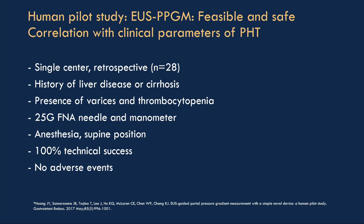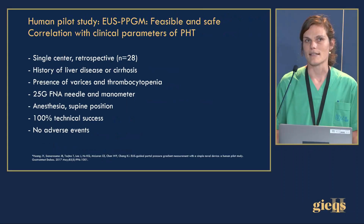After that, there was a human pilot study that showed echoendoscopic portal pressure gradient measurements were feasible and safe, and that they correlated with clinical parameters of portal hypertension. This was a single-center retrospective study including 28 patients with a history of liver disease or cirrhosis. Clinical parameters were defined as the presence of varices and thrombocytopenia. A 25-gauge needle was used, directly connected to the manometer, under anesthesia in supine position. There was a 100% technical success rate and no adverse events.